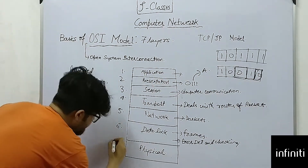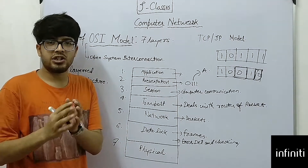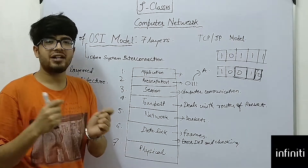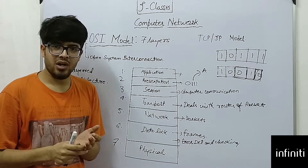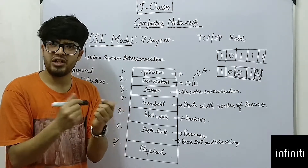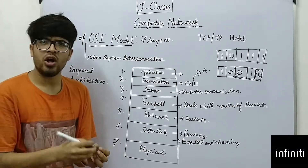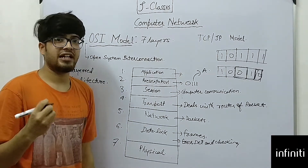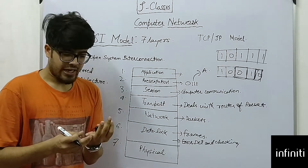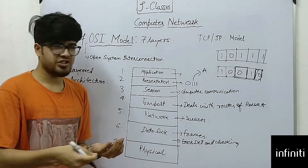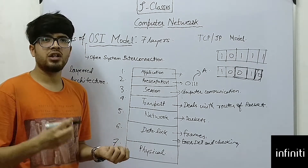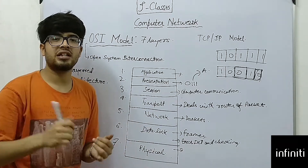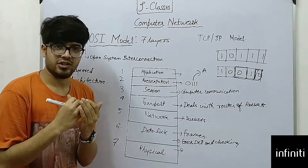The next layer is the physical layer, which deals with the connection of different nodes. It covers guided media and unguided media. Guided media includes coaxial cable, optical fiber, and twisted pair cable — wired connections using metallic media or light in the case of optical fibers. Unguided media includes radio waves, microwaves, and infrared waves — like the infrared used in TV remotes — as well as wireless cellular networks.